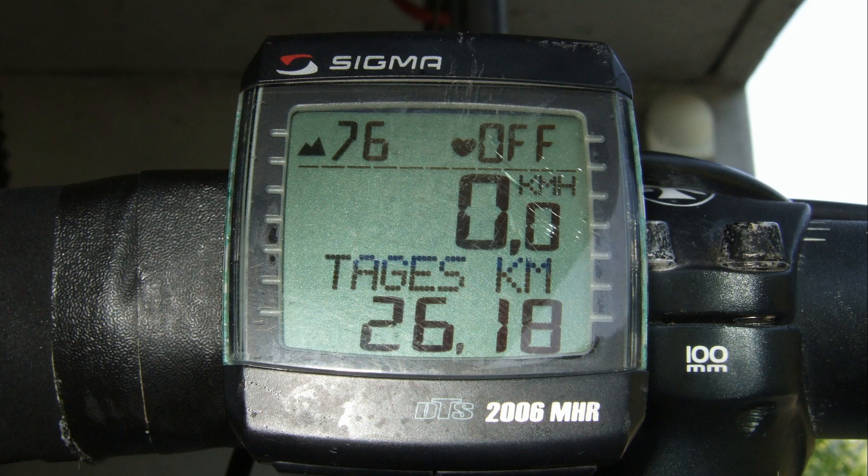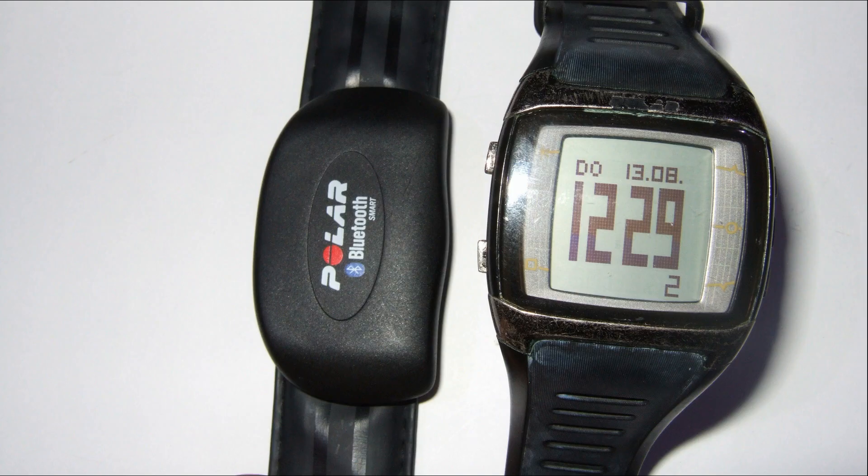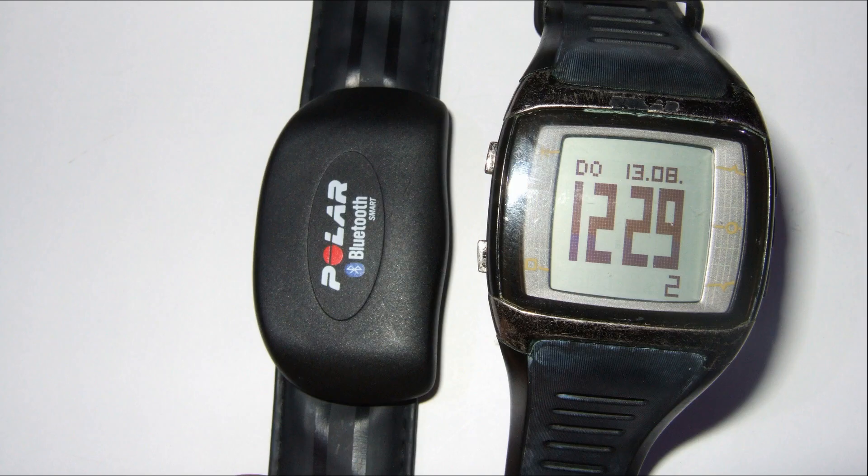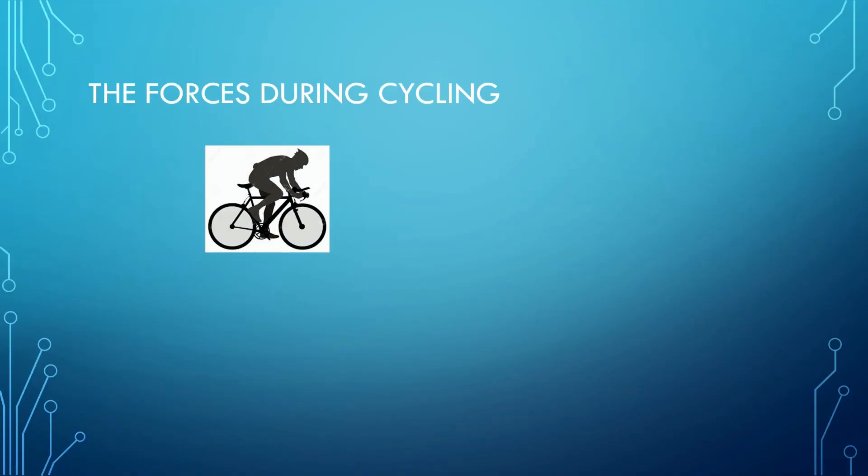As many other cyclists I use a speed meter and a heart rate monitor to track my performance. Let's make a small sketch about the situation. The cyclist has to overcome different forces which all work against him. He does this by inputting the needed force or power into his bike. The speedometer measures only one influencing factor for the external forces.